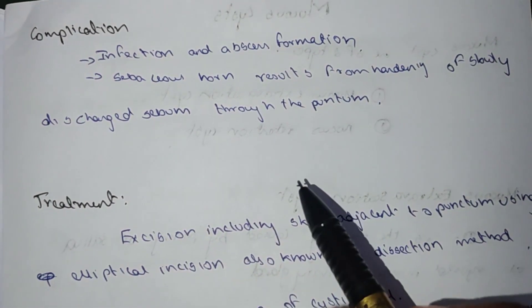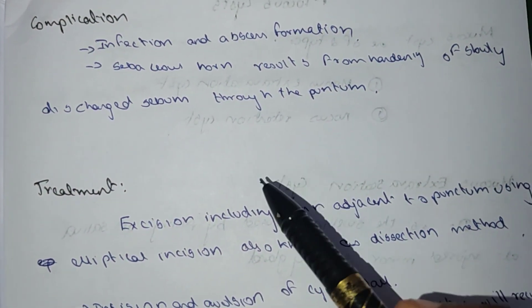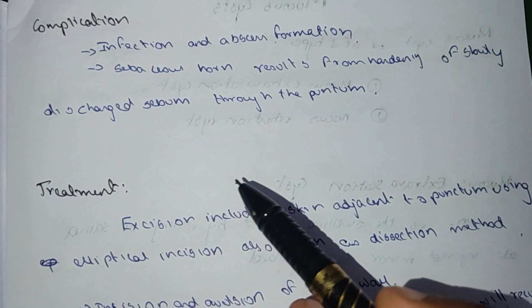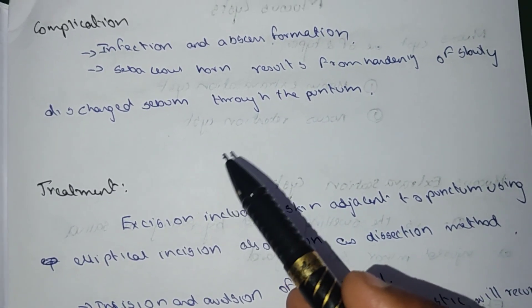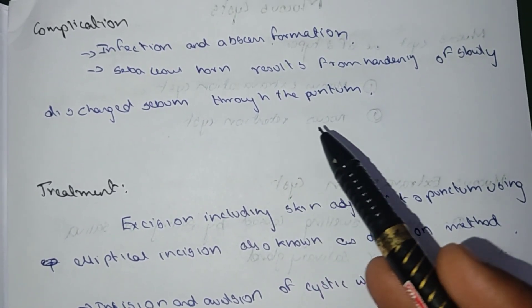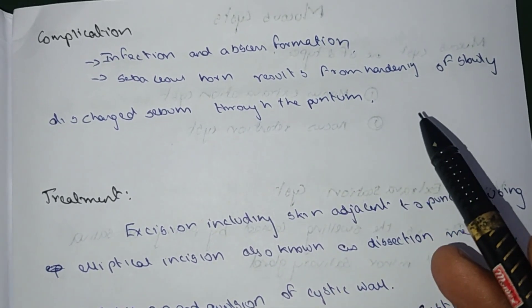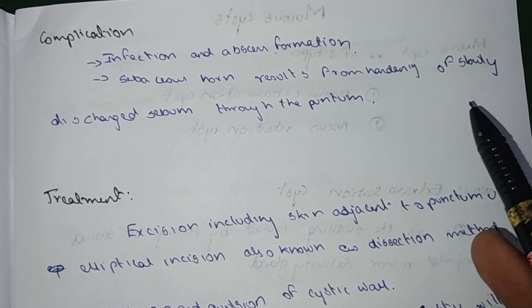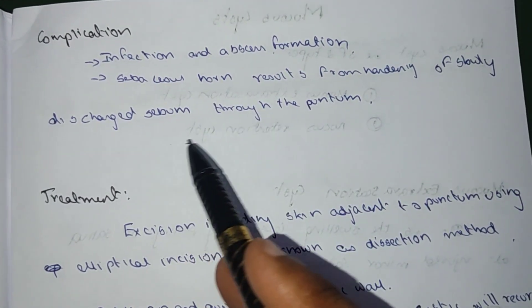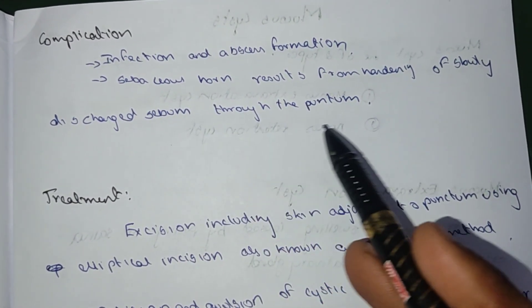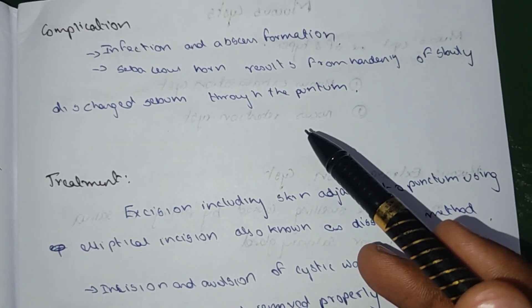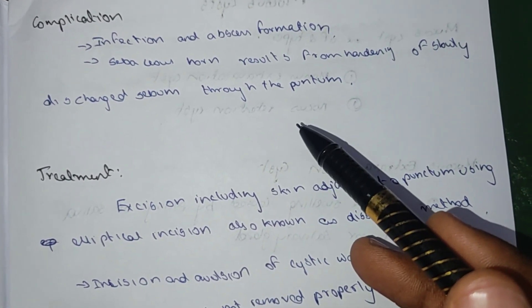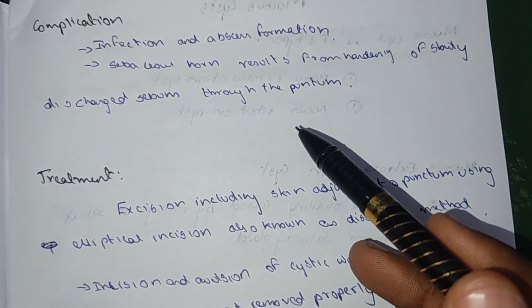Complications include infection and abscess formation. Sebaceous horn results from hardening of slowly discharging sebum through the punctum.